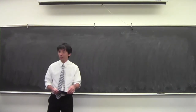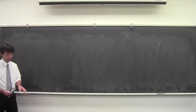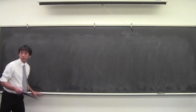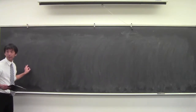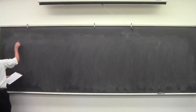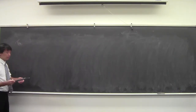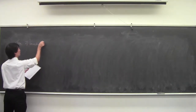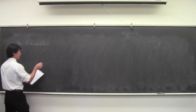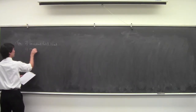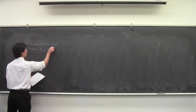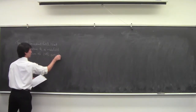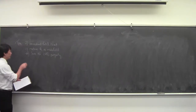This is what's called point set topology, not algebra. Okay, let's get started. So remember what we have. We have this theorem, which we're not proving, that says there is this thing called R. There exists an ordered field that contains Q as a subfield and has the least upper bound property. That field we call R.